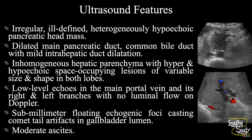In summary: an irregular, ill-defined, heterogeneously hypoechoic mass lesion is noted at the head of the pancreas, causing dilatation of the main pancreatic duct and common bile duct, with mild intrahepatic biliary tree dilatation. The hepatic parenchyma appears inhomogeneous with multiple hyper- and hypoechoic space-occupying lesions of variable size and shape involving both lobes. There are low-level echoes in the main portal vein and both right and left branches with no detectable luminal flow on Doppler. Sub-millimeter floating echogenic foci casting comet-tail artifacts are noted within the gallbladder lumen, with moderate ascites. These features conclude a case of malignant pancreatic head mass causing biliary tree and main pancreatic duct obstruction, with hepatic metastasis, portal venous thrombosis, biliary sludge, and moderate ascites.